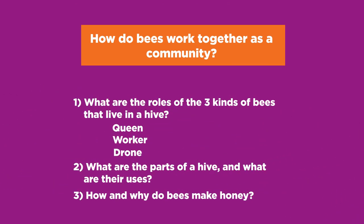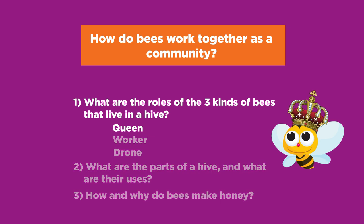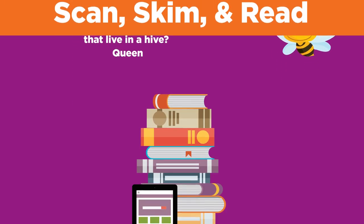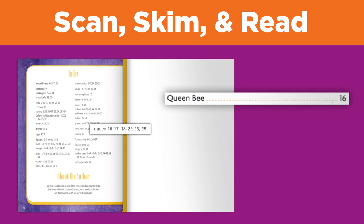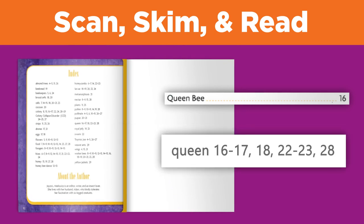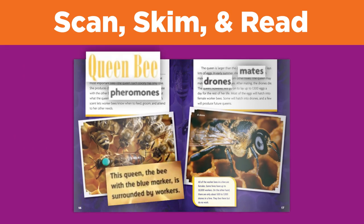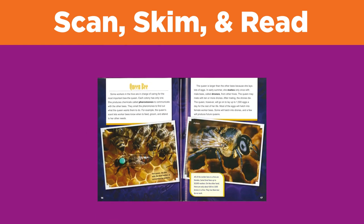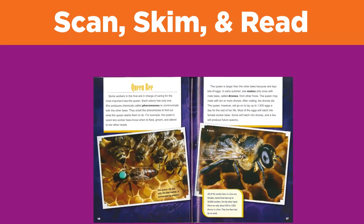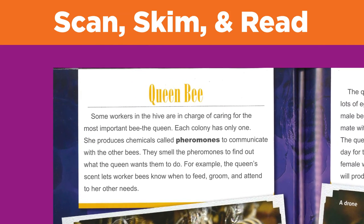Start by looking at your first question: what are the roles of the three kinds of bees that live in a hive? Let's focus on finding information about the queen. Select any source from your yes pile. If your source is a book, browse the table of contents and index for keywords that relate to your question. If a chapter looks promising, turn to it and scan any headings, captions, or bold words. Do the same for an article from a magazine, newspaper, or website. If any sections seem like they'll help answer your question, jump in — you do not need to read the source from beginning to end. Just read the section that you think will help answer your question.